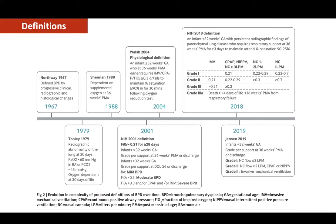Babies on invasive mandatory ventilation were graded two or three based on FiO2: grade two if on IMV with FiO2 of 21%, grade three if on mechanical ventilation with FiO2 more than 21%. Babies on non-invasive respiratory support were graded one, two, or three — grade one at 21%, grade two at 21–30%, and grade three above 30% FiO2. Those on low-flow nasal cannula oxygen were divided into only grade one and grade two. A special grade 3A was assigned to babies who died after 14 days but before 36 weeks.